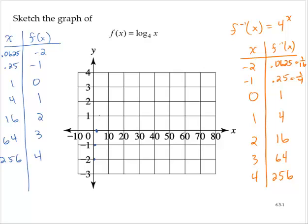4, 1; 16, 2; 64, 3. And then our next point would be 256, 4, and that's off our scale here. That's off our grid.